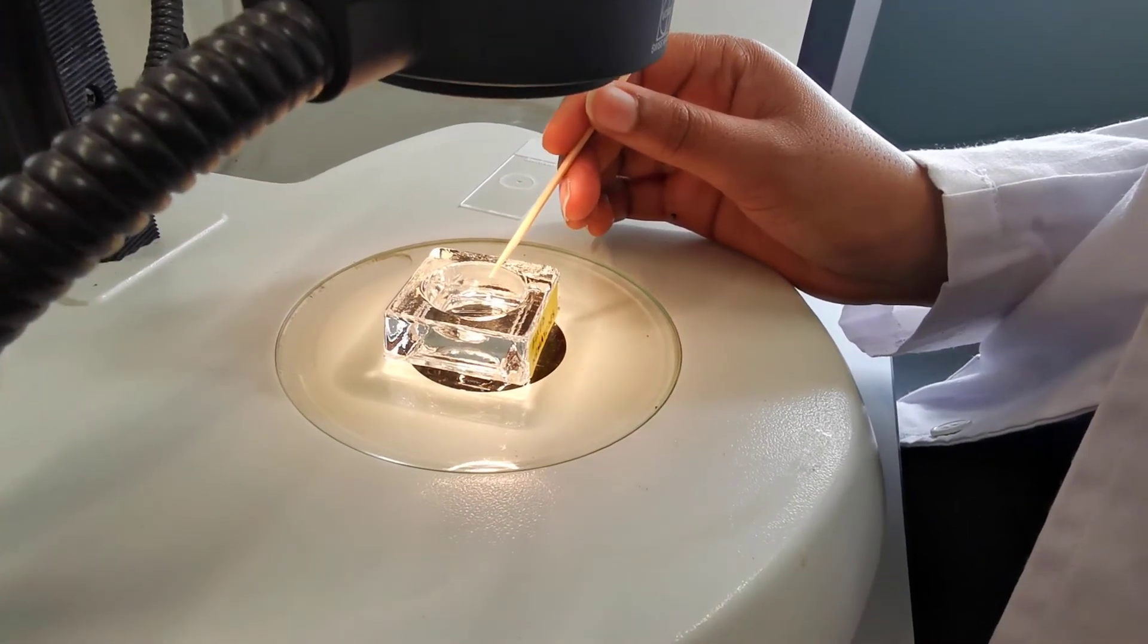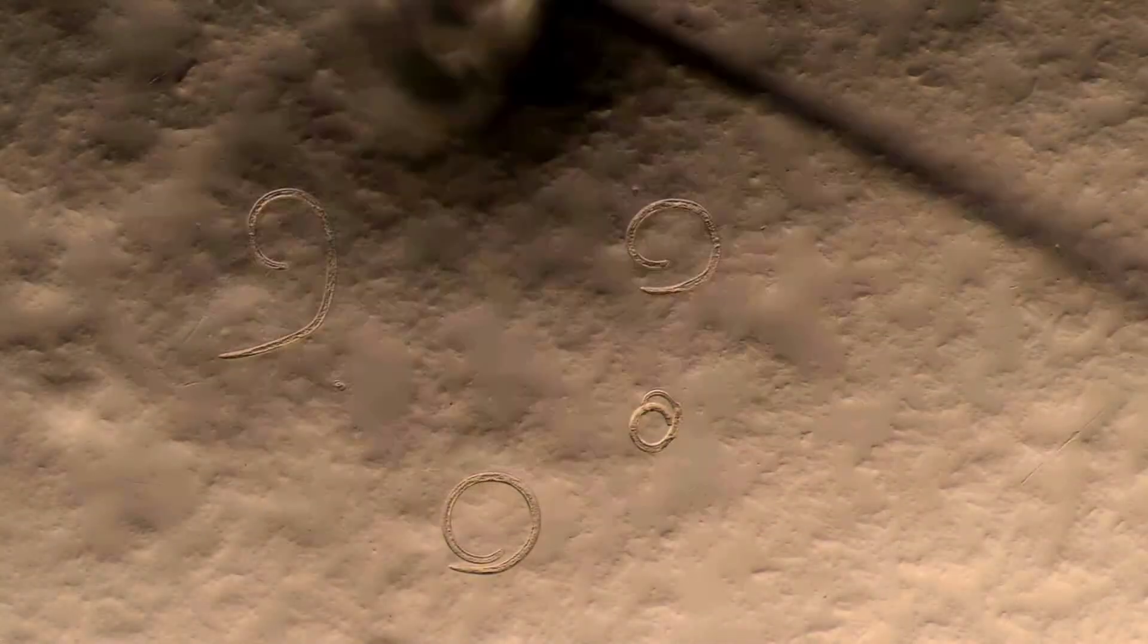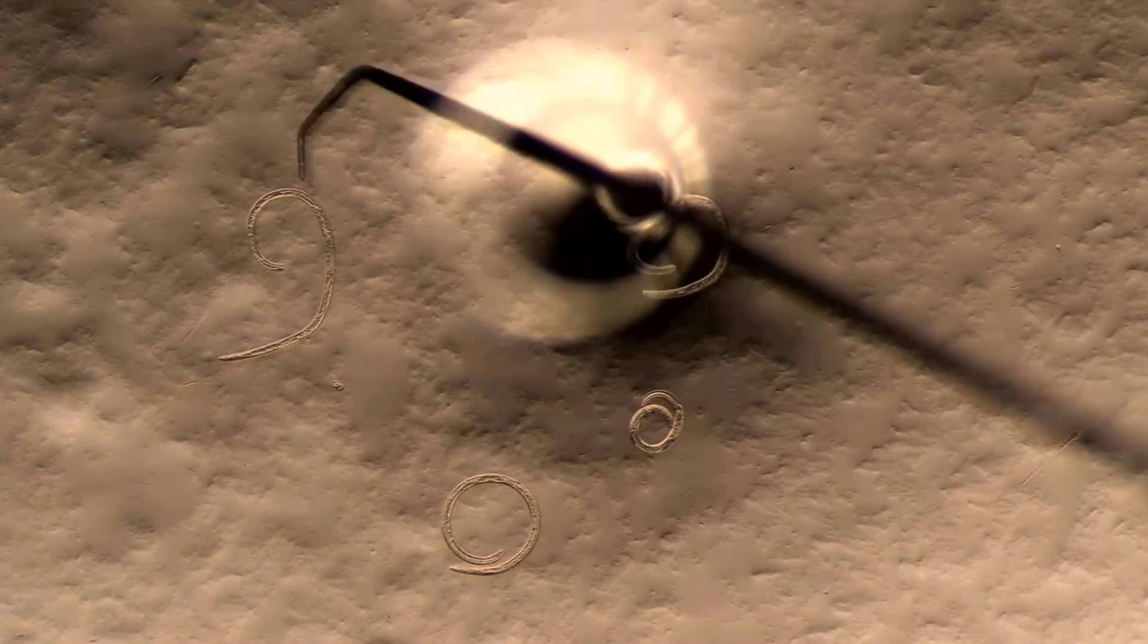One of the fixed nematodes is picked out using a worm picking tool to be transferred into the drop of glycerin created on the glass slide.